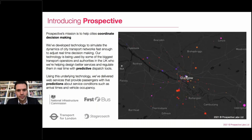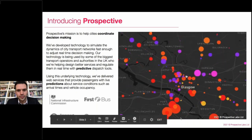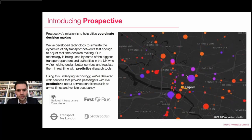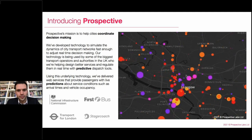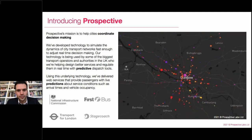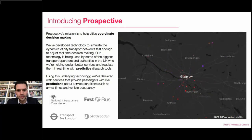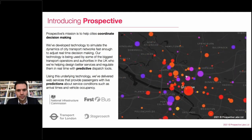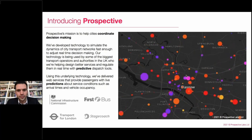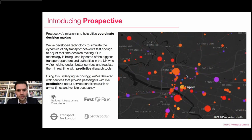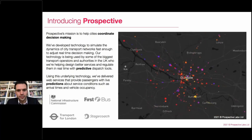Prospective's mission is to help cities and city transport networks coordinate their decision making more effectively. The key technology we're using to enable that is simulation technology. We've developed software that enables organisations to run the dynamics of transport networks very fast in order to predict near-future states of the whole network. That means you can use that foresight to make better planning decisions in advance of a change, and also to make better operational decisions when adjusting the running of a service. The same technology behind those tools is also being used to provide better passenger information, and that's what we'll focus on today.